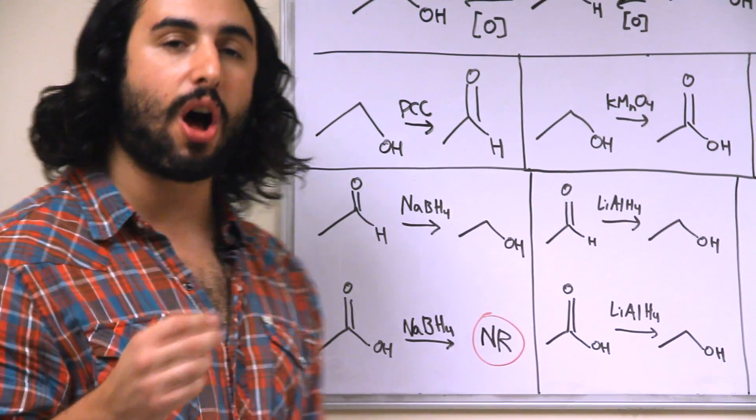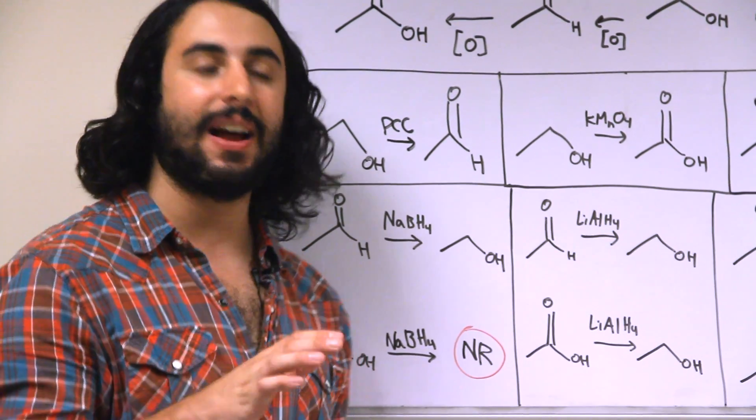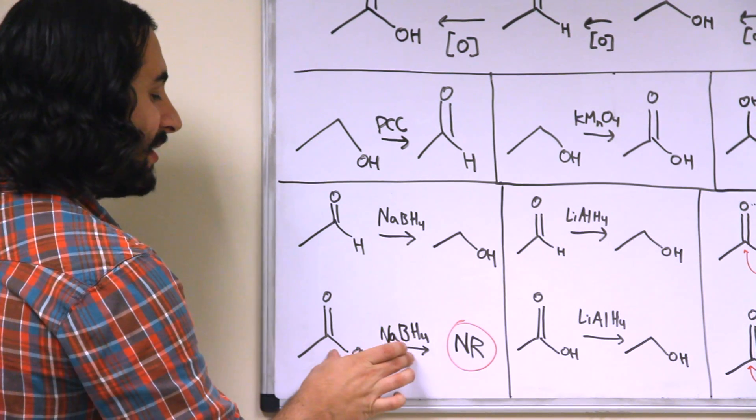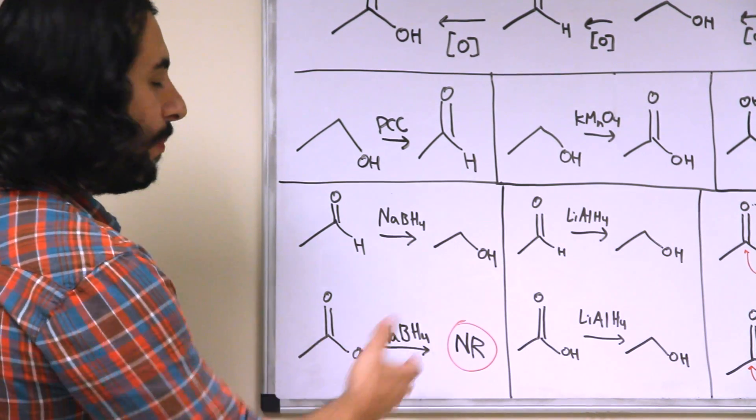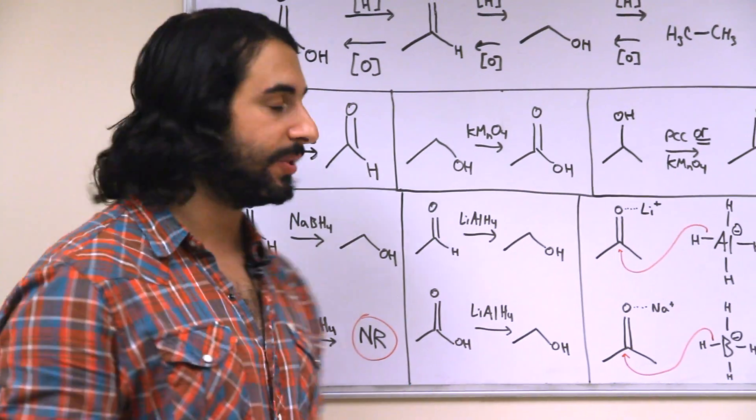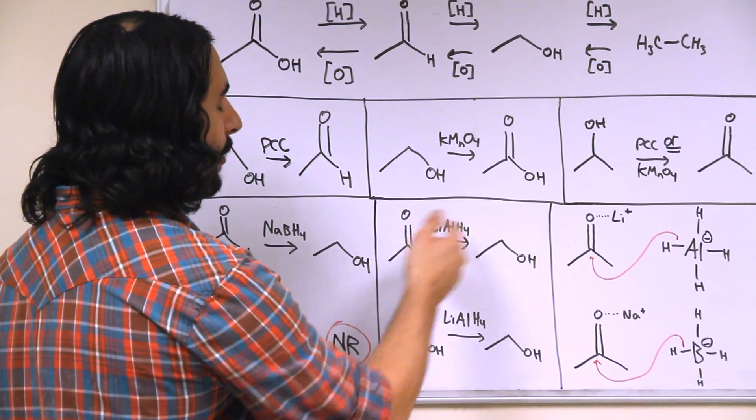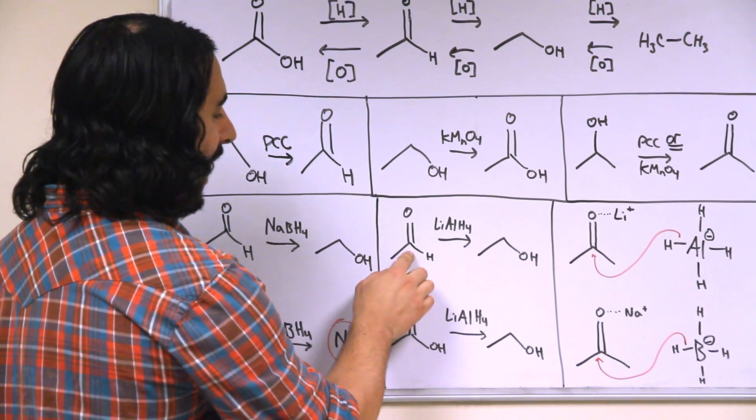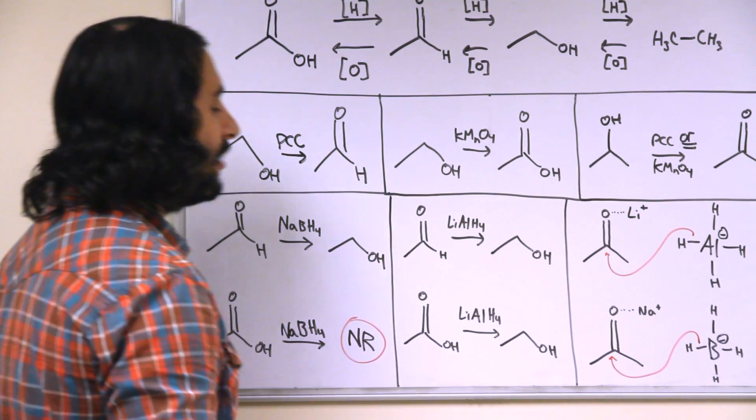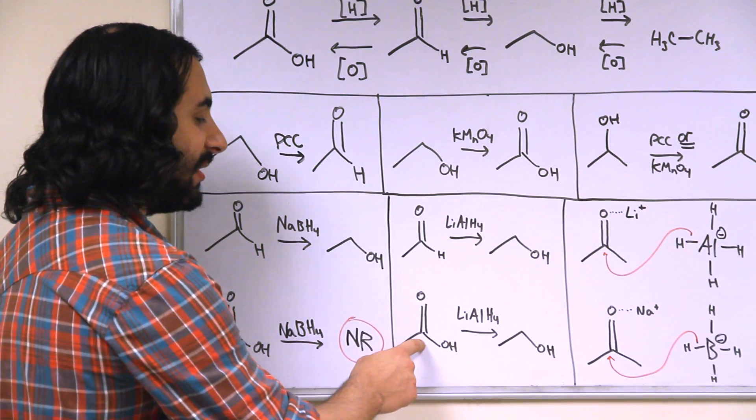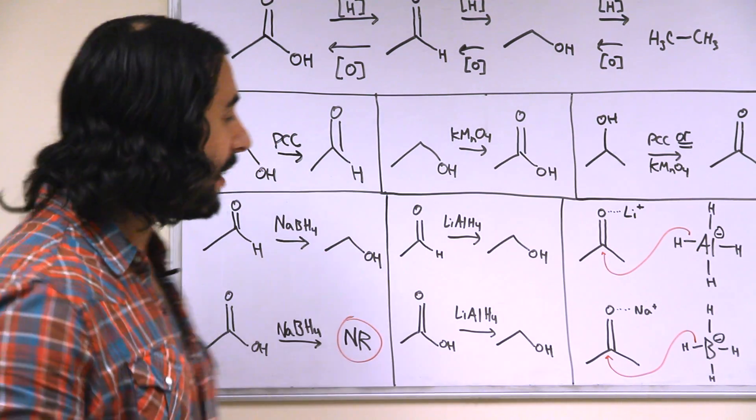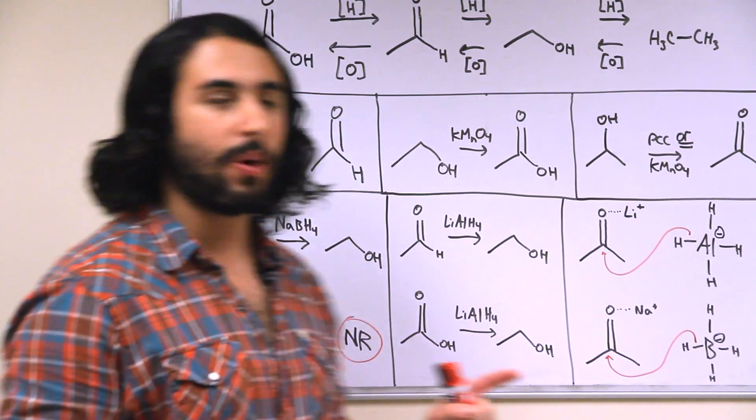It does not have the strength to reduce something like a carboxylic acid. So in the presence of NaBH4, there will be no reaction with a carboxylic acid. But there are stronger or harder reducing agents like lithium aluminum hydride. So here is an aldehyde that can be reduced perfectly well with lithium aluminum hydride. But lithium aluminum hydride is also strong enough to reduce the carboxylic acid all the way to the primary alcohol functional group level. So let's take a look at why that might be.